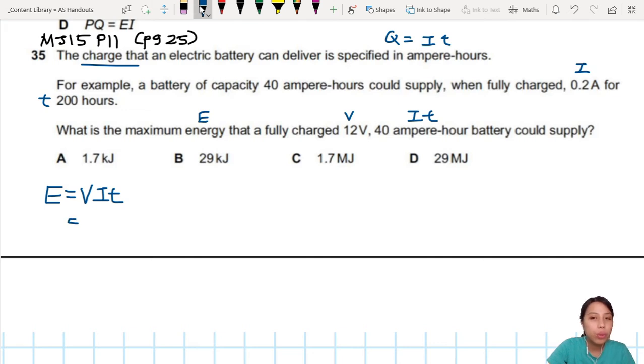They already give us ampere-hours, so 12 volts times 40. Then we're done, we can calculate everything. Wait, wait - you try this and see. Do you see the answer or not?